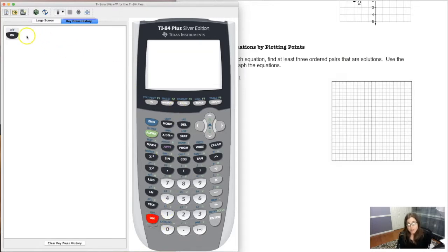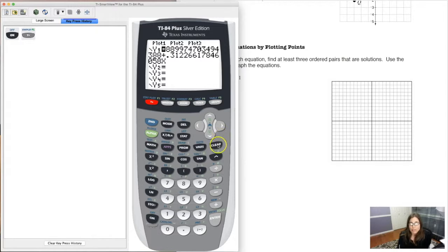And over here, just so we're clear, you're going to see the buttons that I'm pushing. So turn it on, and then in this very top left hand button it says y equals, and I have some stuff in there from a previous class. I'm going to clear that out in just a moment, but if you go into your y equals, you'll see y sub 1, y sub 2, all these things. I'm going to hit the clear key because I want to clear this out.